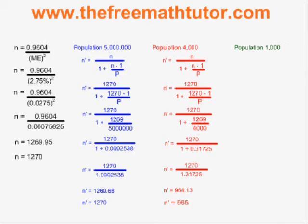We have to round up. Because if we round down, like we normally would, to 964, it's going to give us a margin of error that's slightly larger than 2.75%. And then we see something that makes more sense, which is for a much smaller population, we need a much smaller sample size to achieve the same margin of error. But the 965 is a much greater portion of 4,000 than the 1270 is of 5 million. As you get to smaller and smaller populations, you need a proportionally larger and larger sample size to achieve the same margin of error.